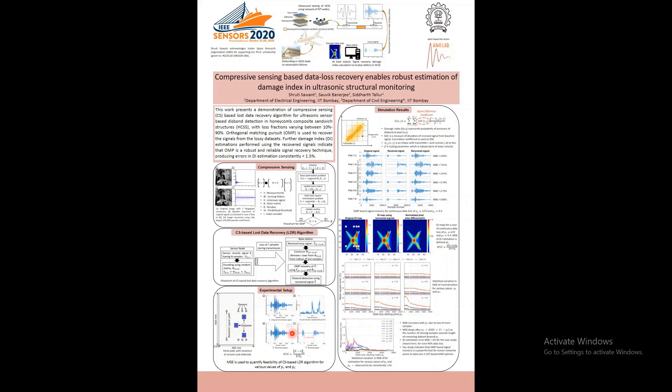To quantify data loss, we define two parameters: P1, the data loss starting point, and PC, the data loss ratio. MSC between the recovered signal and original signal is calculated for various values of P1 and PC to check the feasibility of the algorithm.